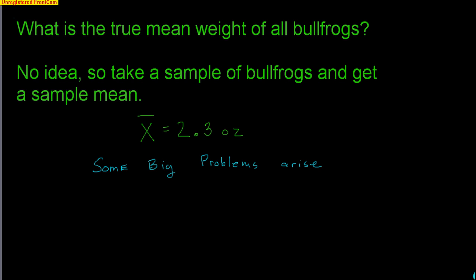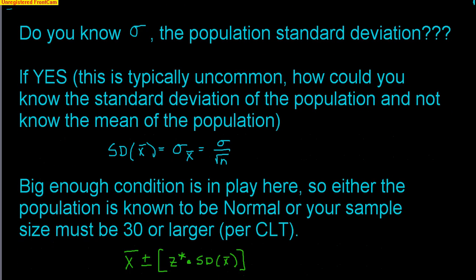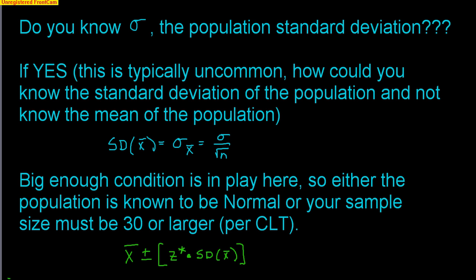A few problems arise with means that don't arise with proportions. Do you know sigma — the population standard deviation? If yes, this is typically uncommon, because think about it: how could you know the standard deviation of the population and not know the mean? So saying yes is pretty uncommon. But let's consider the case where we do know the standard deviation of the population.